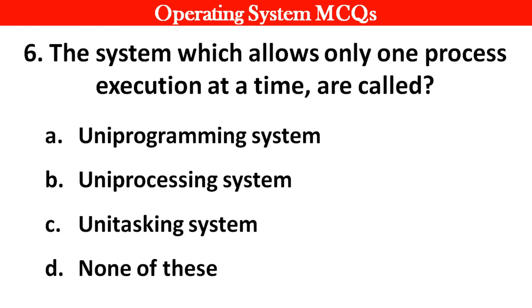Next question: The systems which allow only one process execution at a time are called: Options: A. Uniprogramming systems. B. Uniprocessing systems. C. Unitasking systems. D. None of these. Right answer is option B: Uniprocessing system.